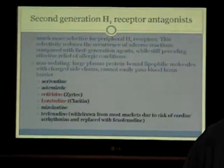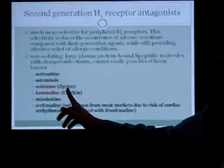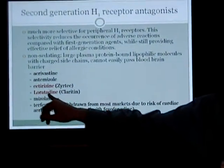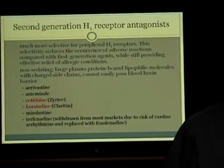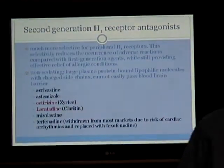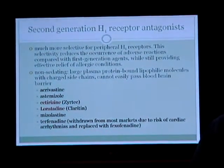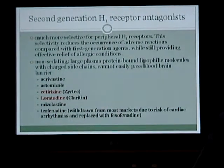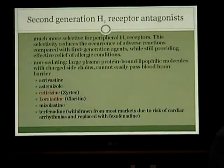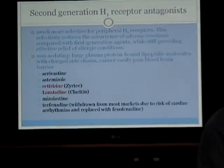Second-generation H1 receptor antagonists include drugs like cetirizine (Zyrtec) and loratadine, more commonly known as Claritin. These drugs are much more selective for peripheral H1 receptors, which leads to a lower occurrence of adverse reactions compared with first-generation medications, but still very high efficacy. They are also non-sedating because they cannot easily penetrate the central nervous system or pass through the blood-brain barrier.